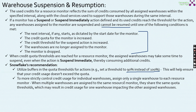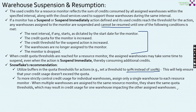To more strictly control the credit usage of individual warehouses, assign only a single warehouse to each resource monitor. When multiple warehouses are assigned to the same resource monitor, they share the same credit quota thresholds, which may result in credit usage for one warehouse impacting other warehouses. As evident in the previous diagram with resource monitor 3, the important point is to assign one resource monitor to one virtual warehouse.